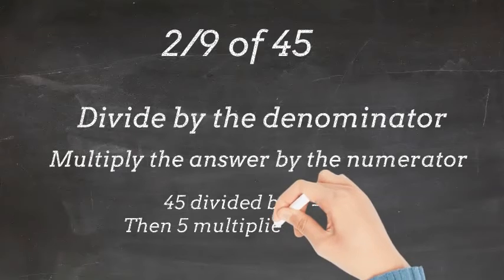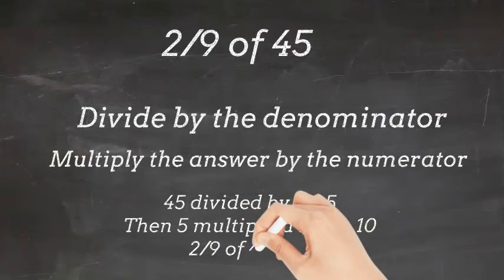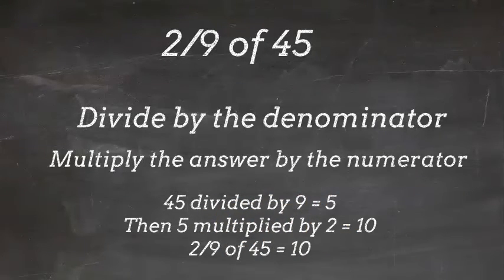Then we are going to do 5 multiplied by 2, which equals 10. 2 ninths of 45 equals 10.